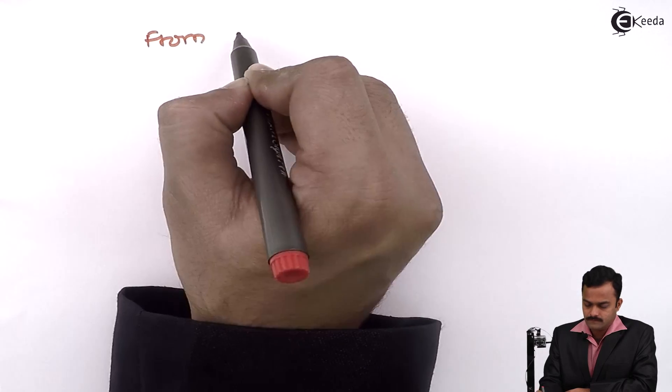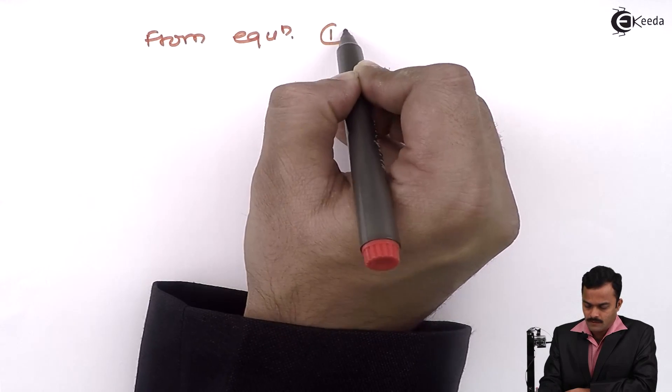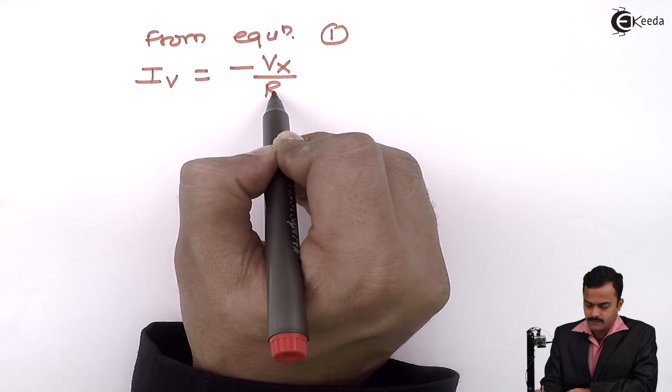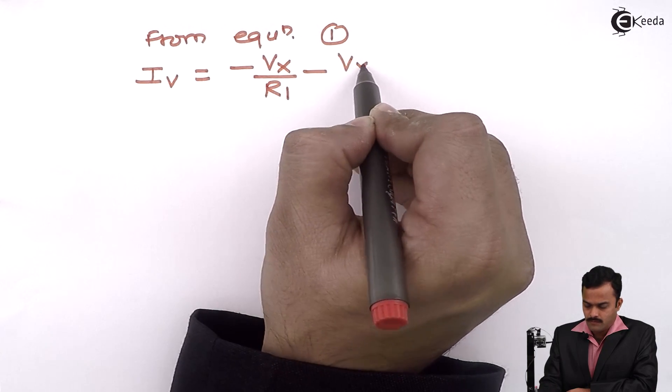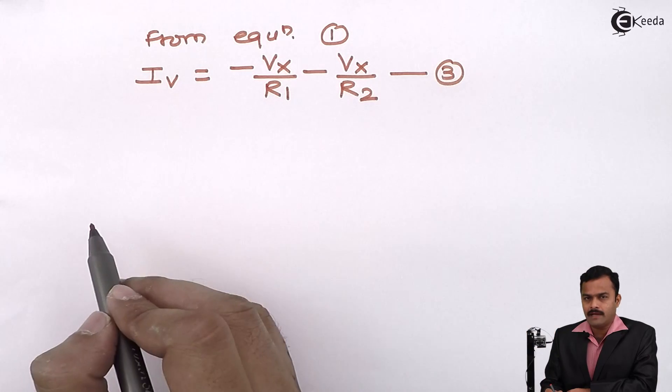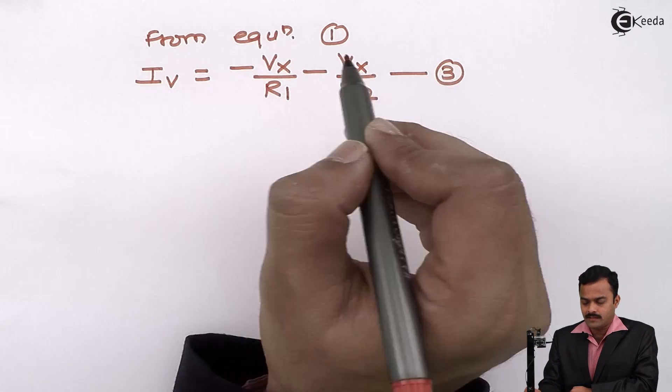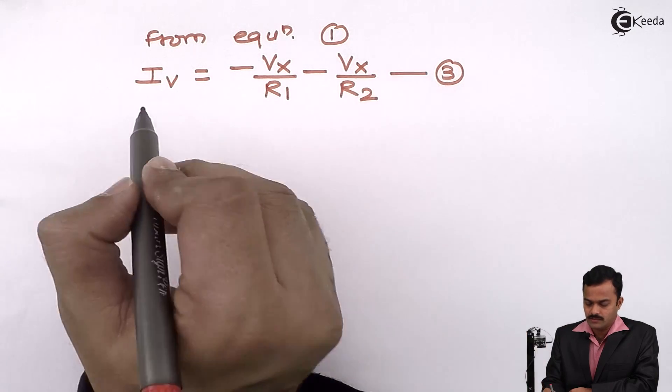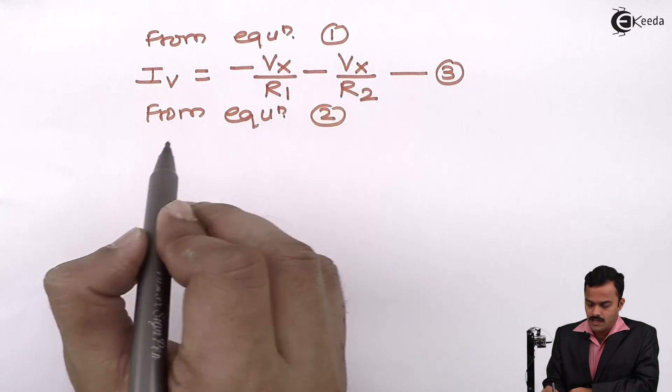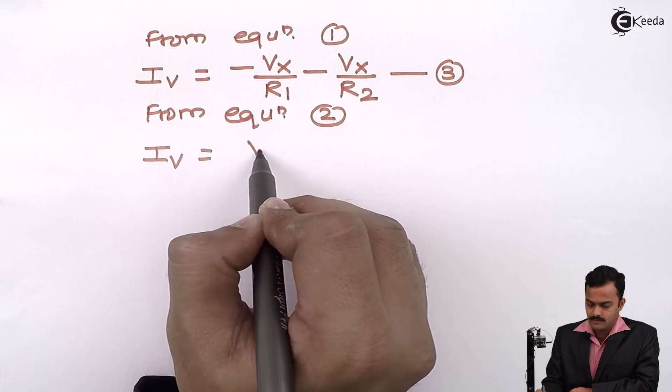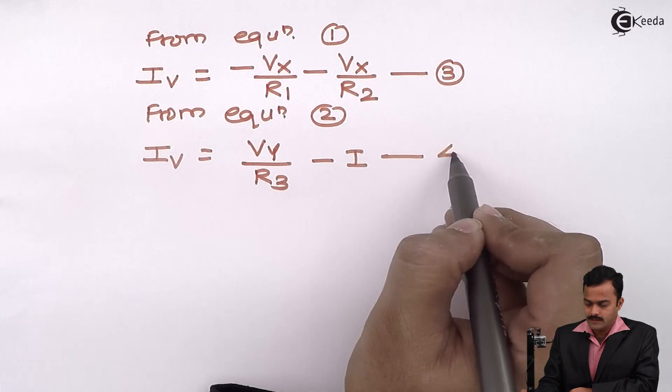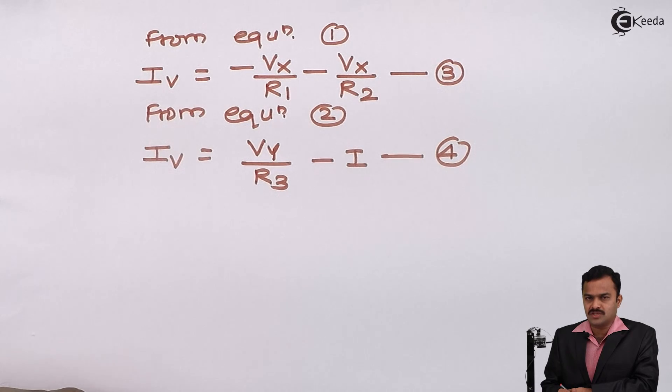So from equation 1, I can say IV equal to minus Vx by R1 minus Vx by R2. So I will just rearrange the terms so that IV will be on one side of equation and remaining terms will be on another side of equation. Similarly, from equation 2, I can get IV as Vy divided by R3 minus I. Another equation I will get equation number 4.